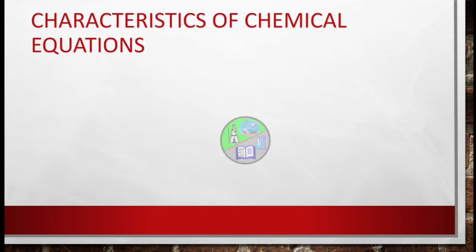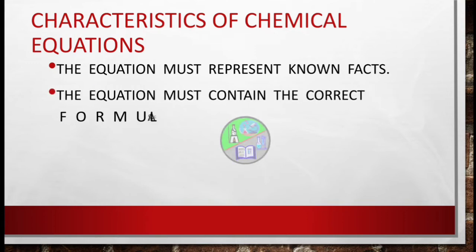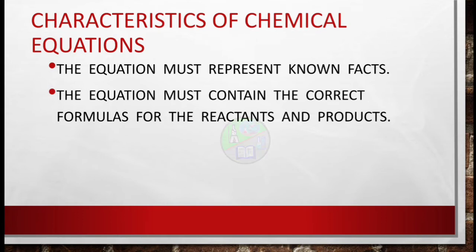Now let's know what are the characteristics of a chemical equation. The first one is the equation must represent the known facts, that is whatever amount of substances taken, additional conditions required, everything must be represented or well explained in the chemical equation. Second is the equation must contain the correct formulas for the reactants and products.